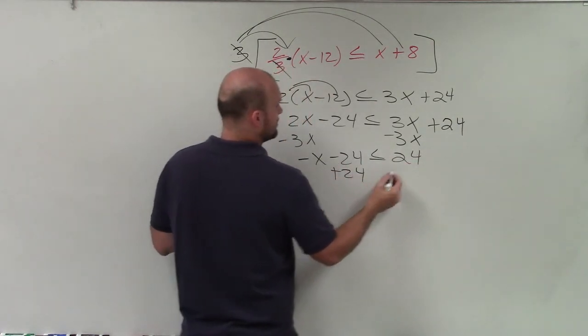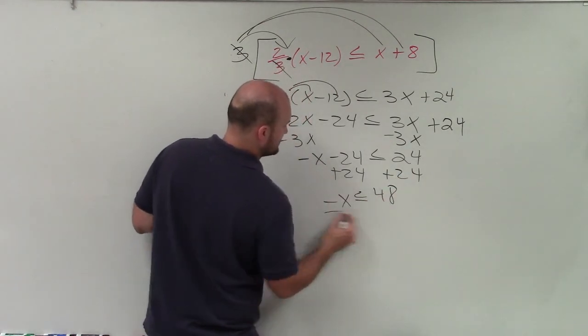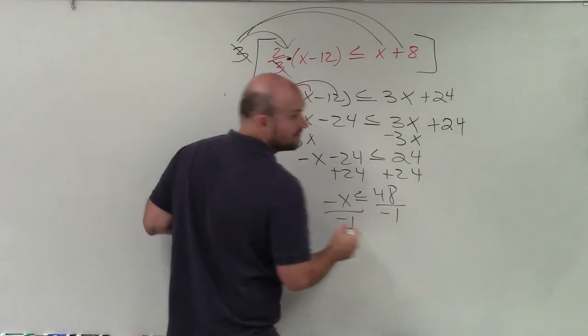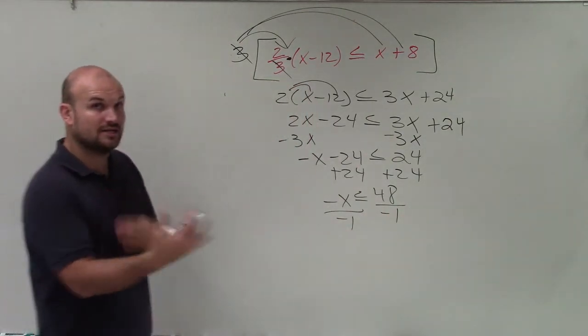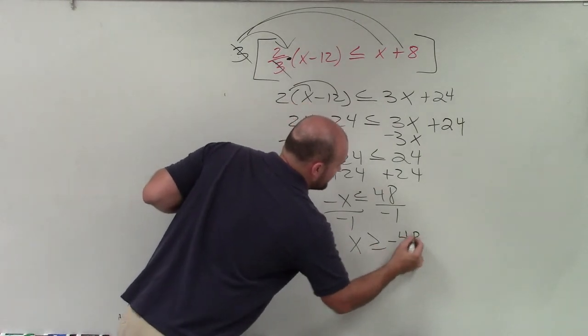Add 24 plus 24. I have negative x is less than or equal to 48, divide by negative 1, divide by negative 1. Now remember, when you're dividing by negative 1, you've got to make sure you flip the sign. So I have positive x is greater or equal to a negative 48.